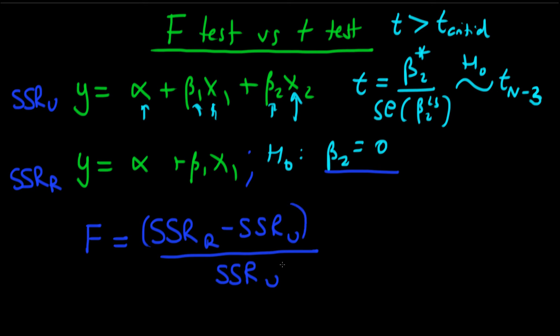We need to standardize this, so we need to divide the numerator by the number of restrictions, which in this case is just 1, because we're just placing one restriction on a coefficient. Then we need to divide the bottom by the number of degrees of freedom in our original model, which is n minus 3.